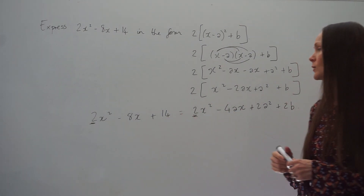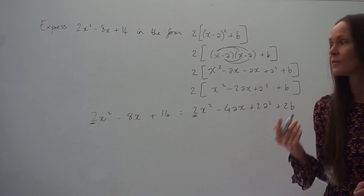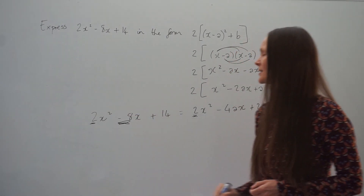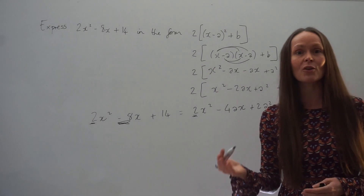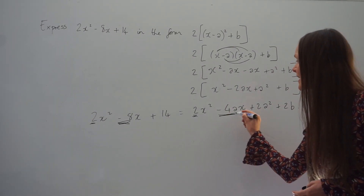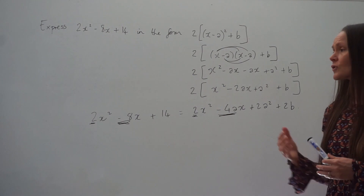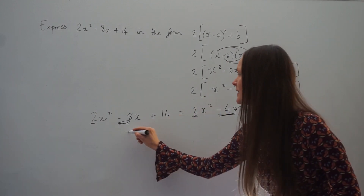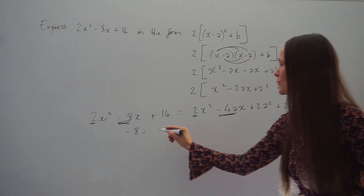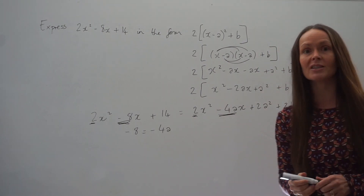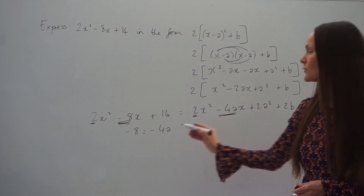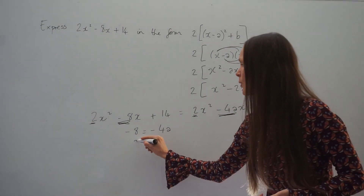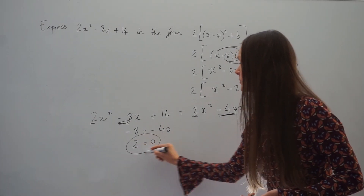Now let's look at the coefficient of x. The number being multiplied by x on the left-hand side is negative 8. The number being multiplied by x on the right-hand side is negative 4a. So they must be equal to each other, and I'm going to form my first equation: negative 8 must equal negative 4a. I can solve this equation to work out the value of a — if I divide both sides by negative 4, negative 8 divided by negative 4 is positive 2. So a is equal to 2.